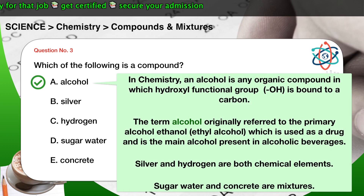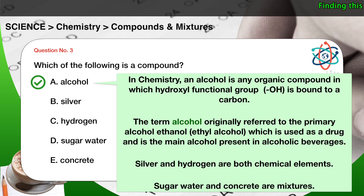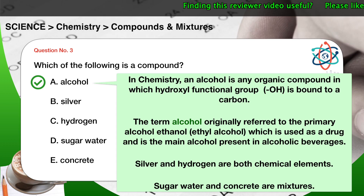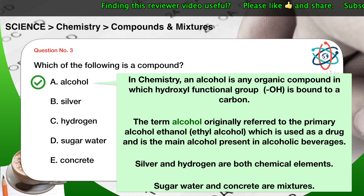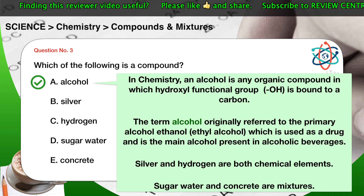The correct answer is A. In chemistry, an alcohol is any organic compound in which a hydroxyl functional group is bound to a carbon. The term alcohol originally referred to the primary alcohol ethanol, or ethyl alcohol, which is used as a drug and is the main alcohol present in alcoholic beverages. Silver and hydrogen are both chemical elements. Sugar water and concrete are mixtures.